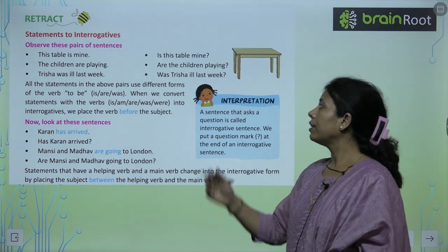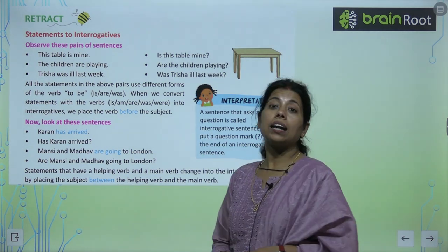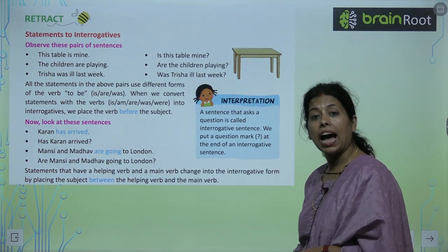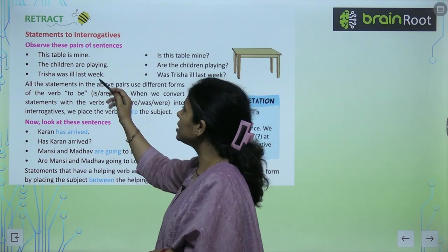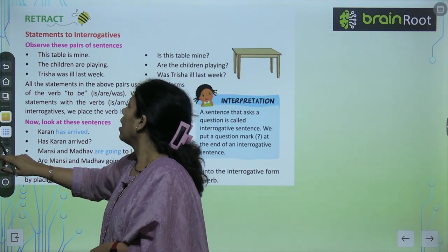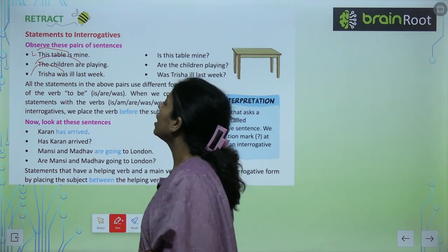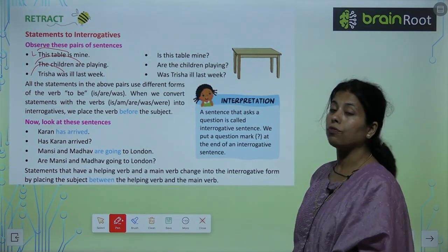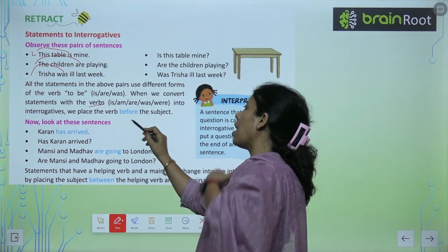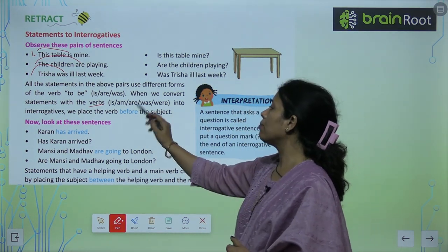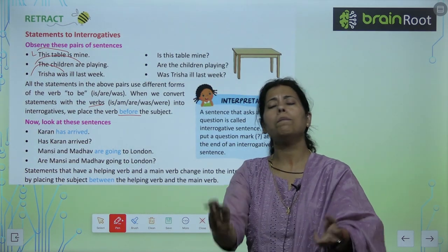Statement to interrogative — सीधा interrogative पर आते हैं. 'This table is mine' → 'Is this table mine?' 'The children are playing' → 'Are the children playing?' 'Trisha was in last week' → 'Was Trisha in last week?' यहां पर एक pattern चल रहा है — is, are, was पहले आ जाता है। When we convert a statement with the verbs is, am, or was into interrogative, we place the verb before the subject.